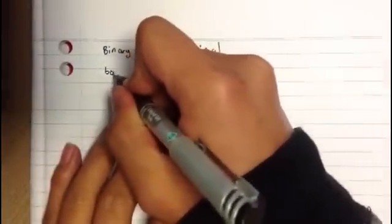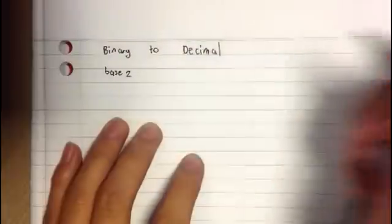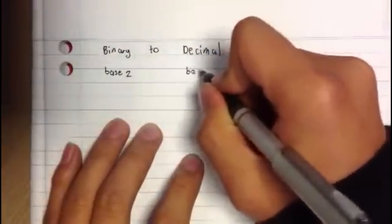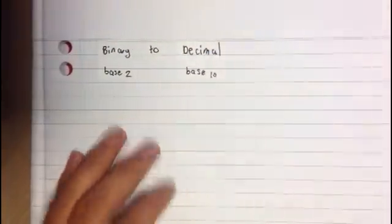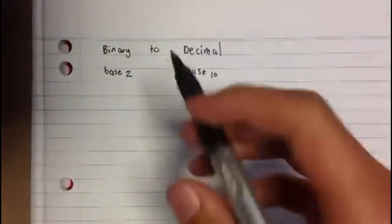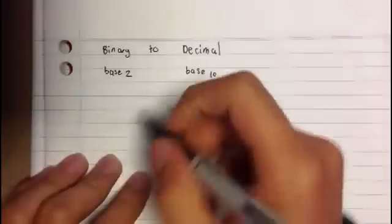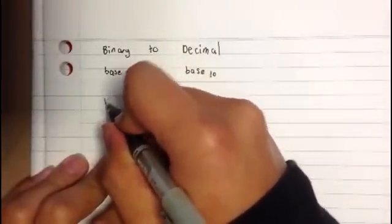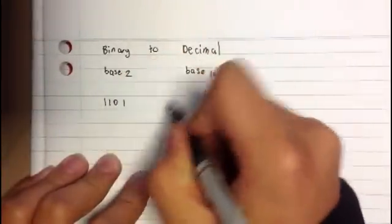Binary is base 2 and decimal is base 10. Say we wanted to convert the number 1101 to decimal.